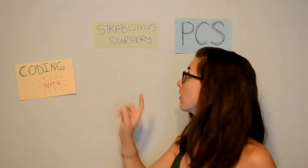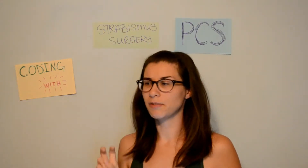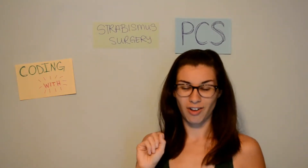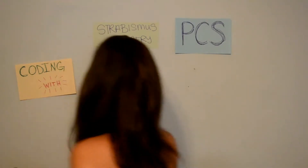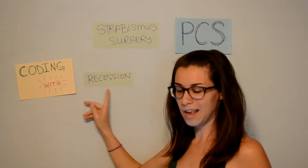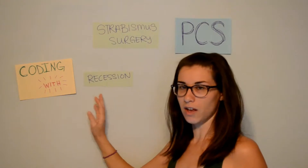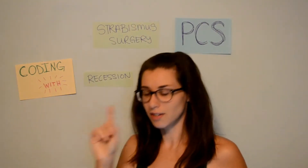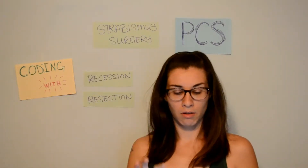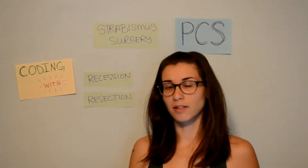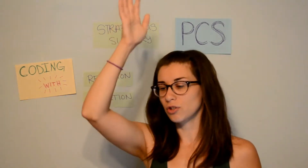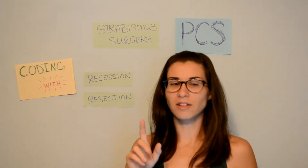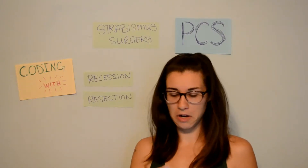With strabismus surgery, there are two types of procedures that can be done. There is a weakening procedure called a recession, and the other one is a strengthening procedure called a resection. The article goes through the actual process of how they get into the eye, but we'll wait until we actually code this in the PCS code book to read through that.